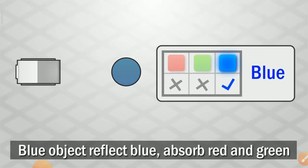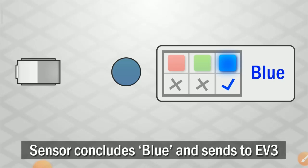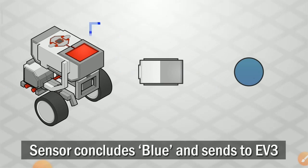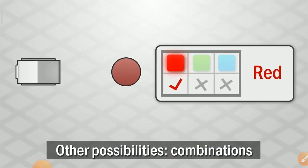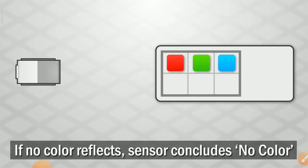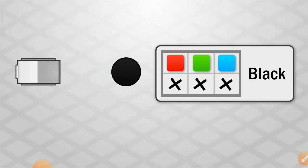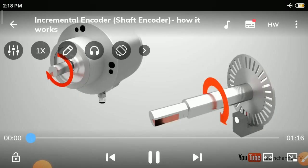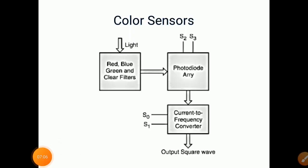Blue object reflects blue, absorbs red and green. Sensor concludes blue and sends to EV3. Other possibility is combinations. If yellow object reflects red and green, absorbs blue, red plus green equals yellow. If no color reflects, sensor concludes there is no color. If no reflection, then there is black. Like this, we have seen the color sensor.